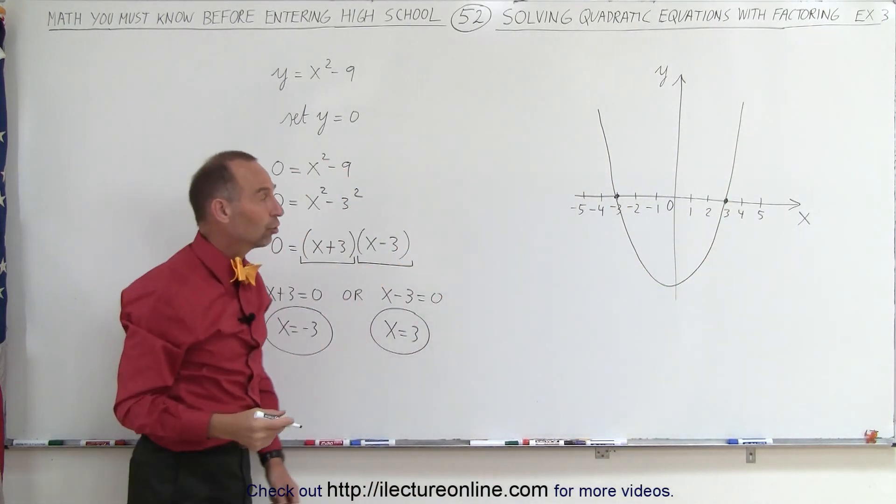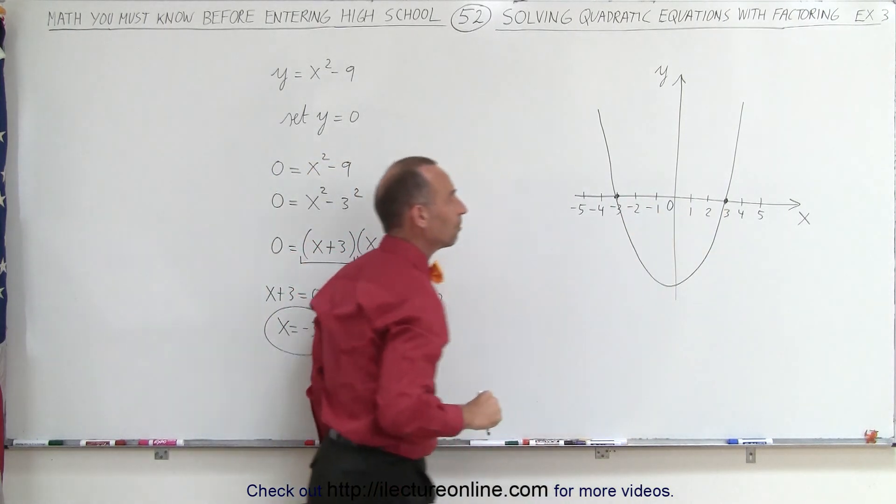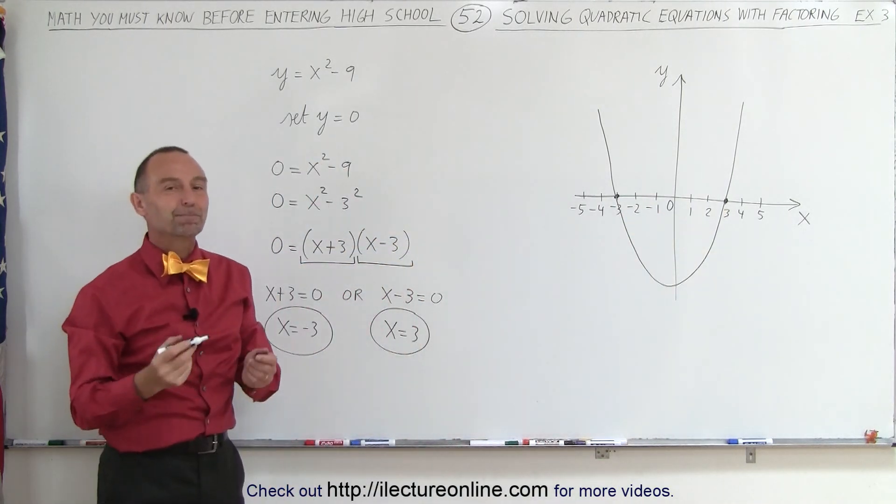That's the solution to the quadratic equation. The solution is the two points where it crosses the x-axis at minus 3 and at plus 3. And that's how it's done.